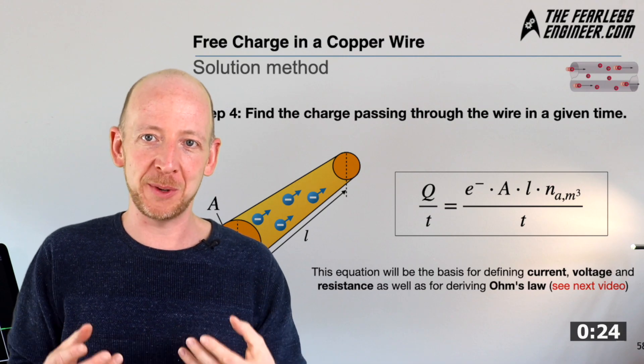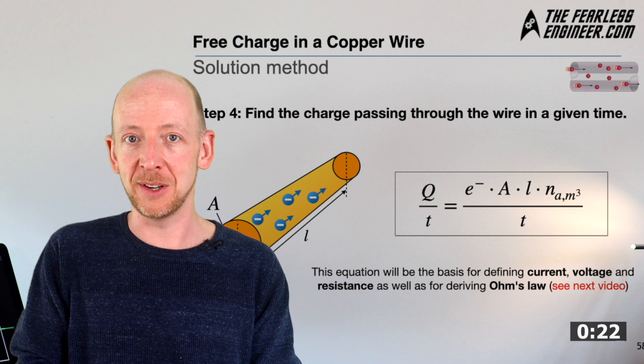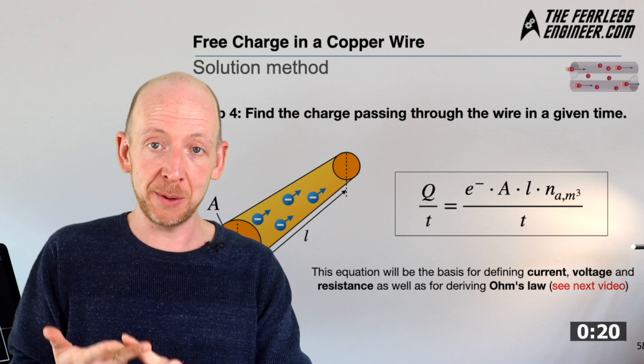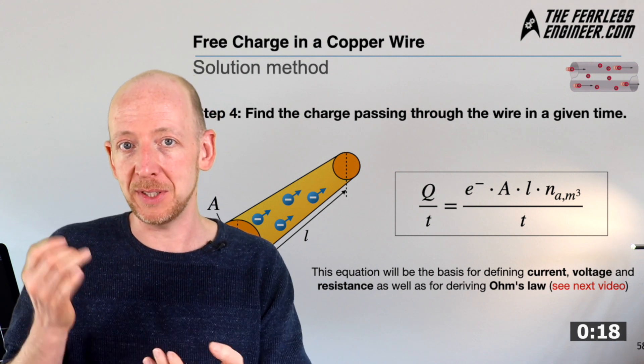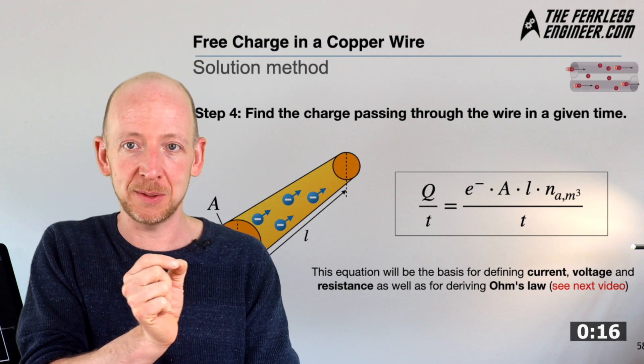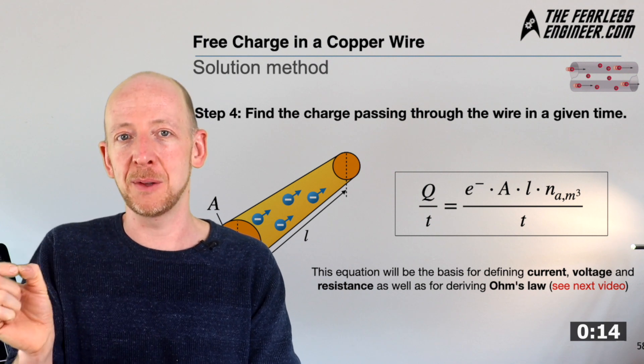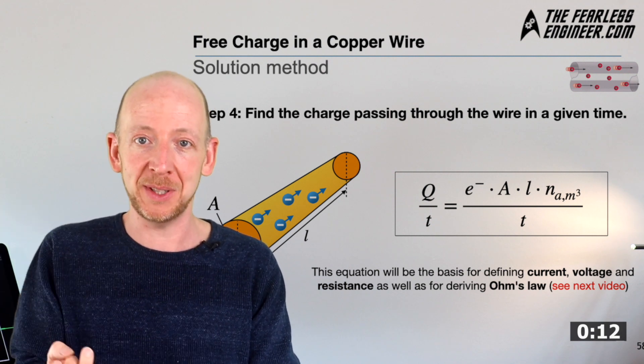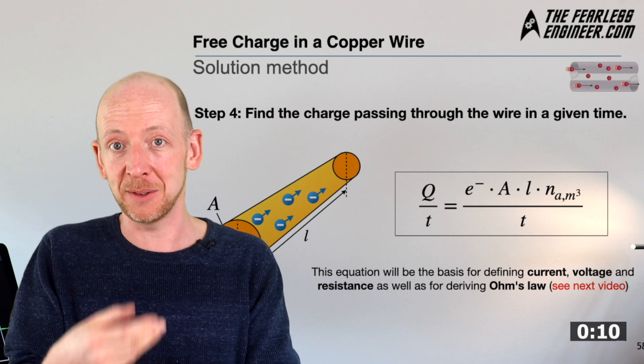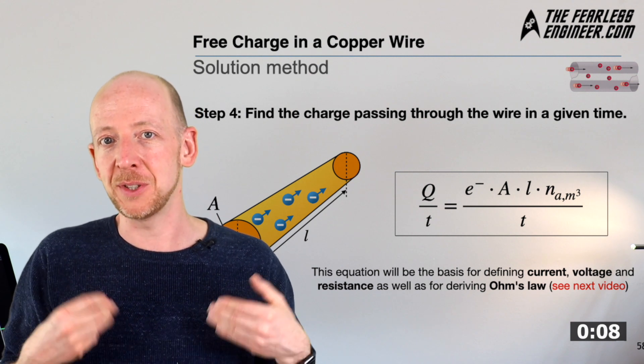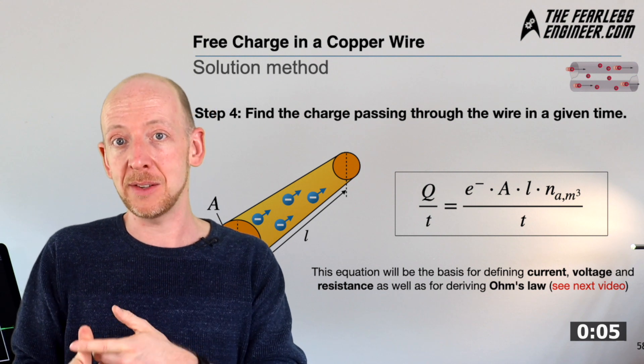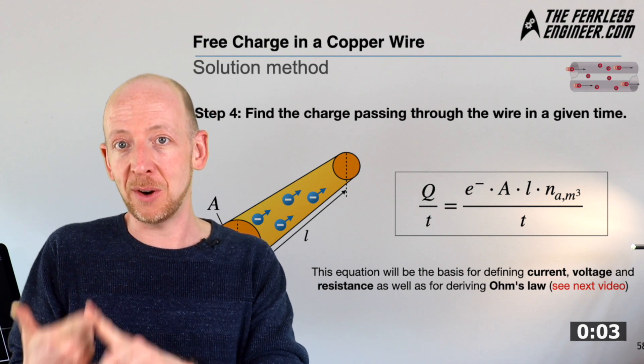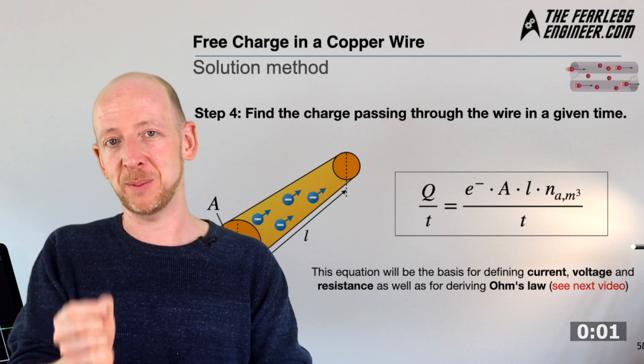And the question is of course which numerical value for T should be used here? Is it one second? Is it one minute? Is it one hour? And the answer is actually really simple. T is the time it takes the electrons to travel over the entire length of the wire. And so the time is naturally dependent on the drift velocity, on the drift speed of the electrons which in turn depends on both the electron mobility in copper and on an electric field E that causes the charge carriers to move in the first place.